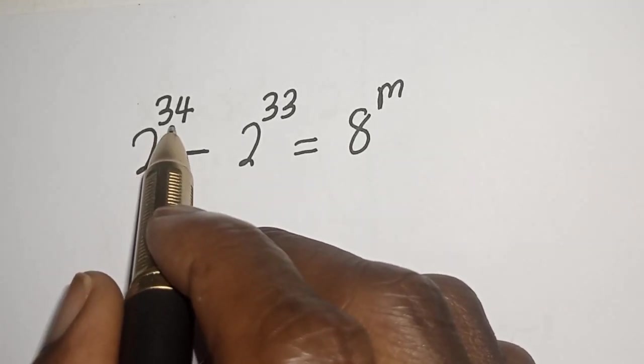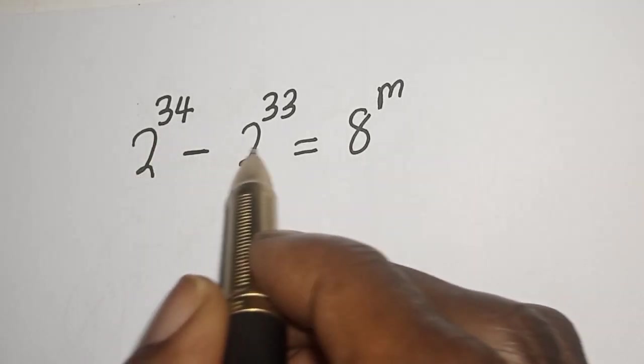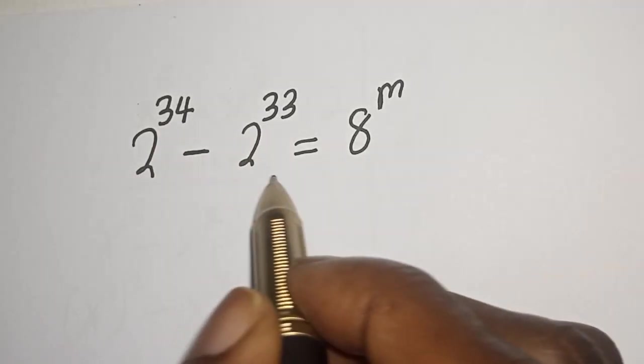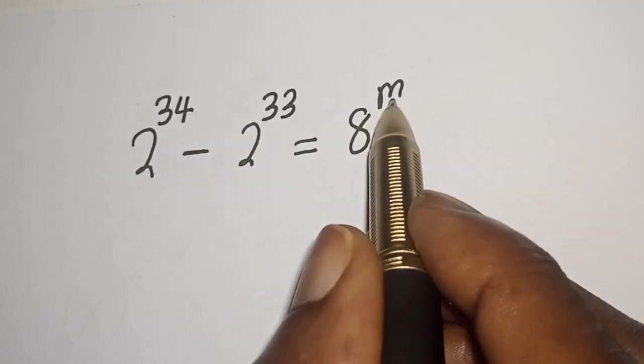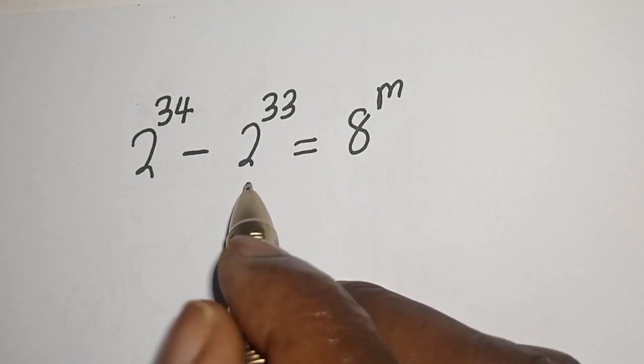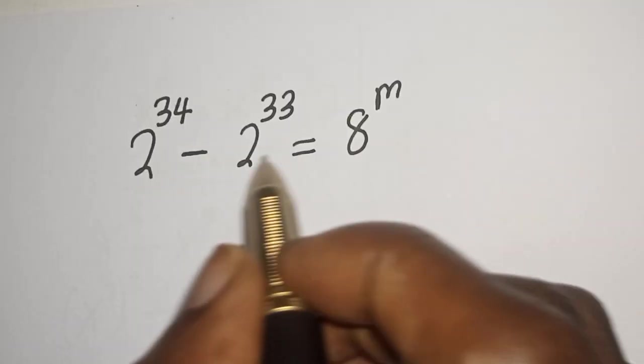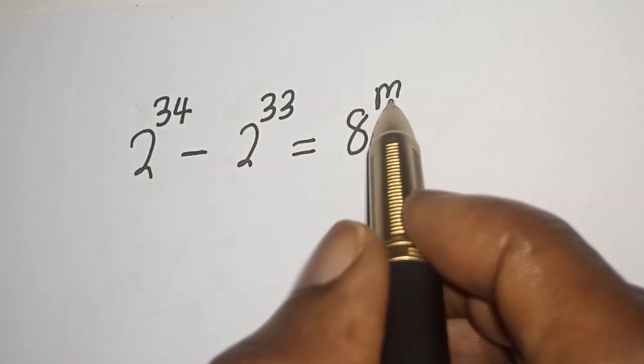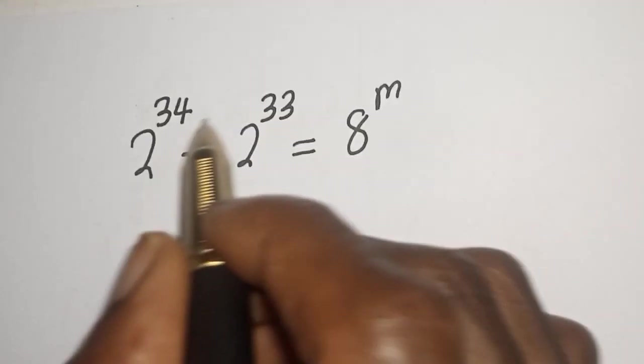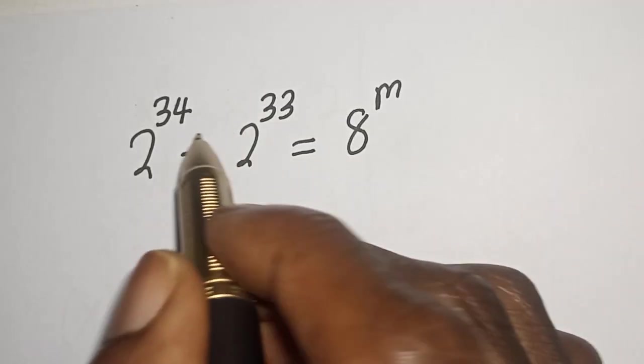2 raised to power 34 minus 2 raised to power 33 is equal to 8 raised to power m. Hi everyone, welcome to my class. In this class, I want to find the value of m from this nice equation.